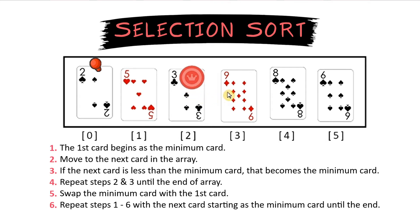Now we move on to the 9. 9 is not less than 3 so we move on to the 8. 8 is not less than 3 and 6 is also not less than 3. So 3 was the smallest number left in the array. We'll swap that with the next item which was the 5. Now 3 and 2 are in order.